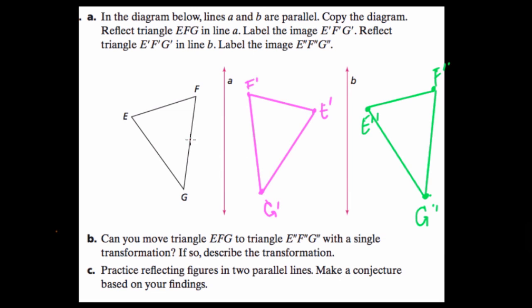Sure, instead of reflecting twice, I could have just taken this shape and translated it to the right. I could have slid it over to this spot over here. And they want us to make a conjecture.